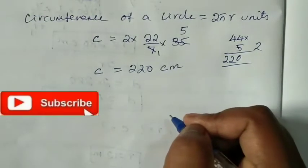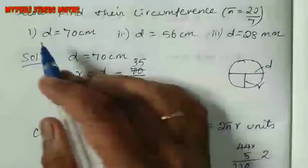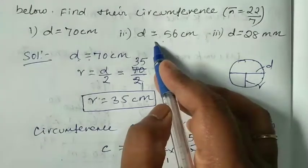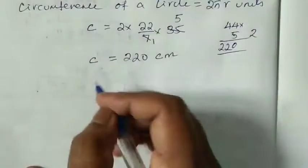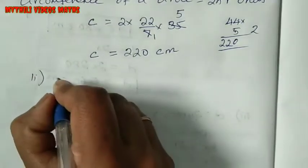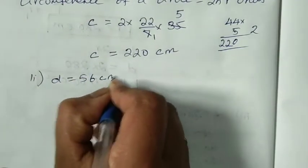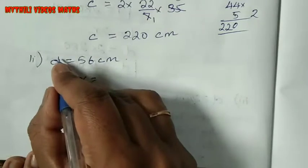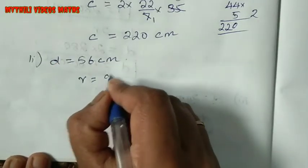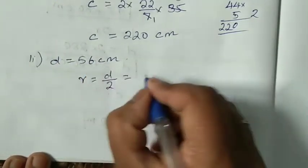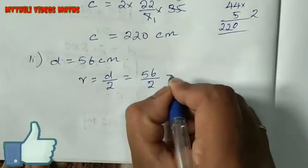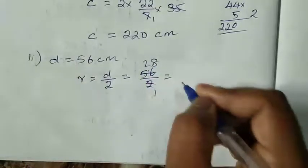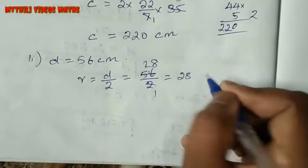Now the second subdivision: D equals 56 cm. Find the radius. Radius equals D divided by 2, that is 56 divided by 2. Cancel: gives radius equals 28 cm.